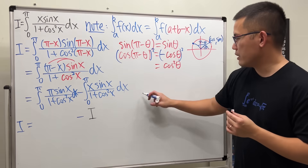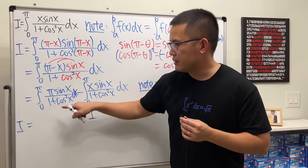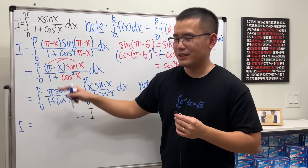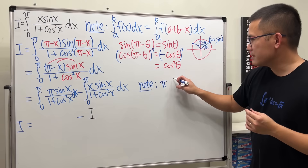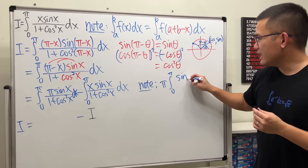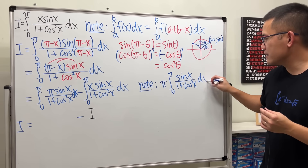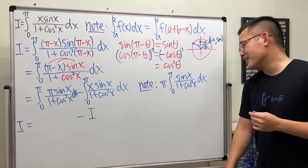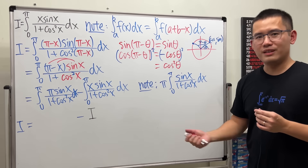Notice that in the first integral, π is just a constant — not an x — so we can factor it out front: π times the integral from 0 to π of sin(x)/(1 + cos²x) dx. We can integrate this — I showed that earlier — so let's go ahead and plug in the numbers.